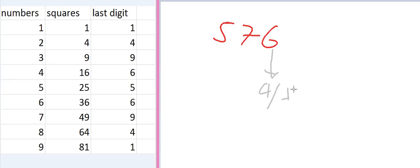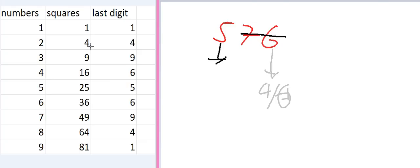Next, we cut off the last two digits and look at what remains, which is 5. For the second step, we look at the squares of numbers and find the largest square that is still less than or equal to 5. Starting from 1: 1 is less than 5, 4 is less than 5, but 9 is greater than 5. So we select 4, and since 4 is the square of 2, our second digit is 2.